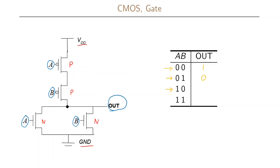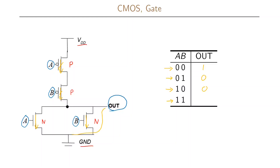When A is one and B is zero: the P transistor with input A will not be conducting since A is one, but the one with input B will be conducting. For the N-type transistors it is the opposite — the one with input A will be conducting and the one with input B will not. So we have a short circuit from ground to the output, giving zero in the truth table, and no connection between the voltage supply and the output. When both A and B are ones, none of the P-type transistors will be conducting but both N-type transistors will be conducting, again giving a short circuit from ground to output and an output of zero, with no connection between voltage and output.